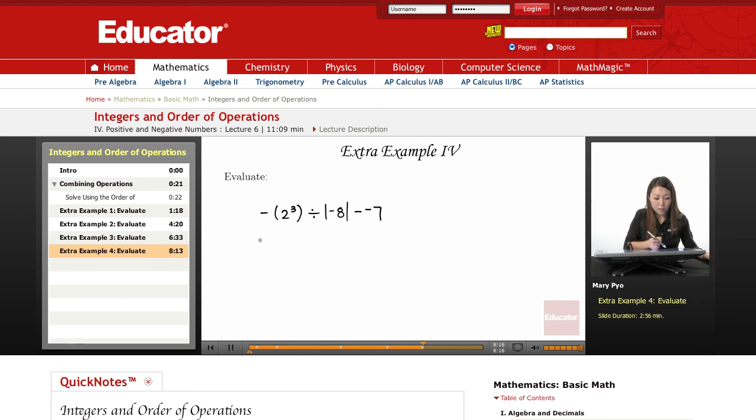Fourth example, let's see. I have negative this divided by absolute value of that minus negative 7.